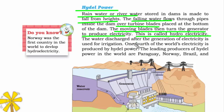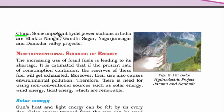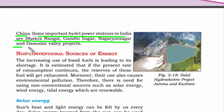Hydroelectricity is a non-conventional source of energy because after generation, the water is used for irrigation — so there is no wastage. Currently, one-fourth of the world's electricity is produced by hydropower. Countries using it include Paraguay, Norway, Brazil, and China. India also has hydropower stations located at Bhakra Nangal Dam, Gandhi Sagar Dam, Nagarjuna Sagar Dam, and Damodar Valley projects.